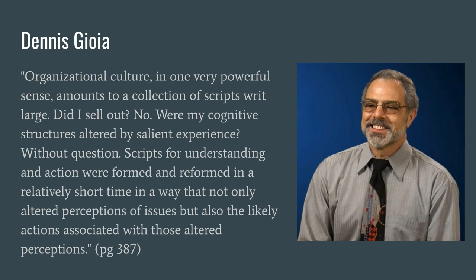He continues: 'Organizational culture in one very powerful sense amounts to a collection of scripts writ large. Did I sell out? Were my cognitive structures altered by salient experience? Without question. Scripts for understanding and action were formed and reformed in a relatively short time in a way that not only altered perceptions of issues, but also the likely actions associated with those altered perceptions.' What Gioia wants to argue is that the reason he made the decisions he did was that he had adopted the organizational culture and, in particular, the organizational scripts — the scripts telling him what to do and what not to do.